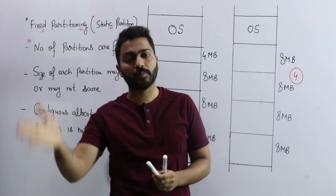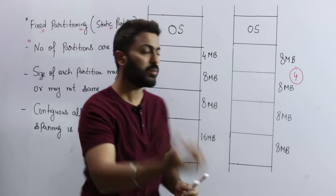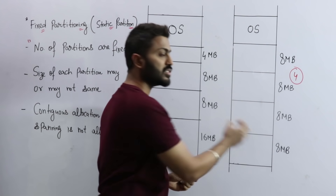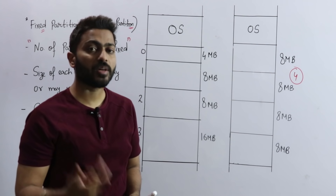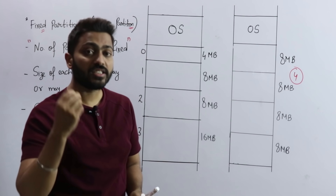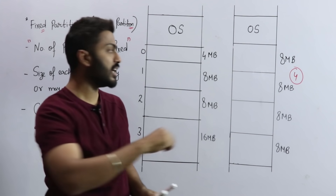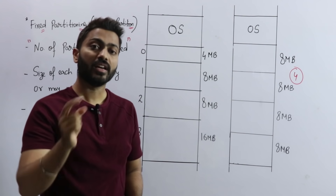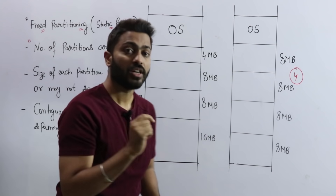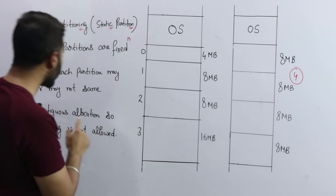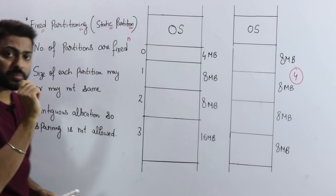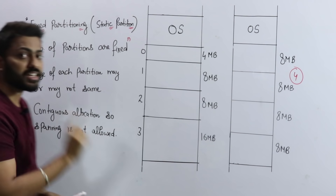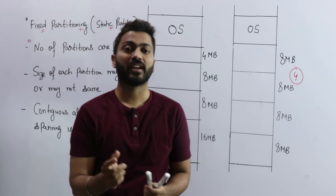Whenever we call a process from secondary memory, we can easily accommodate it in one of these partitions. The concept here is contiguous allocation — meaning the process either fits entirely in one partition or it doesn't go in at all. Spanning is not allowed — we cannot split a process across two partitions.